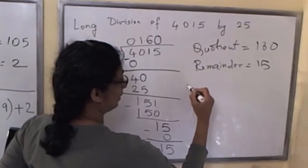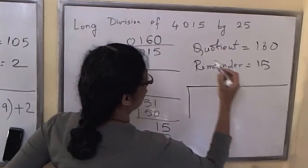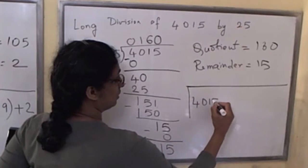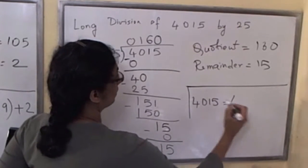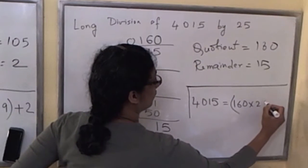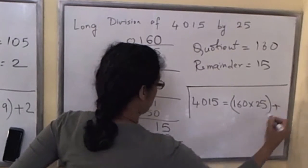And once again, we can summarize this using a nice equation: 4015, which is the dividend, equals 160 copies of 25, and then plus the remainder 15.